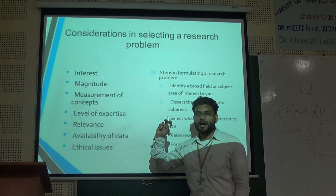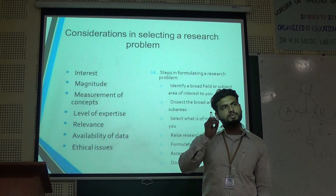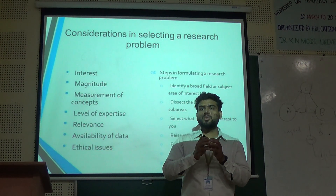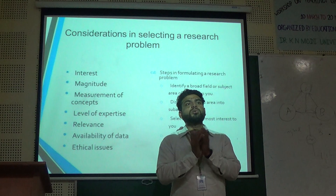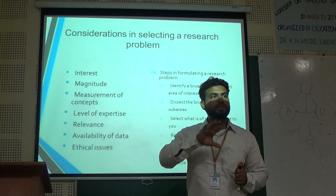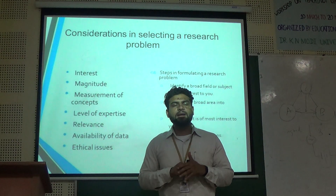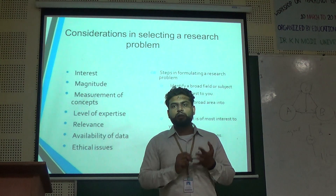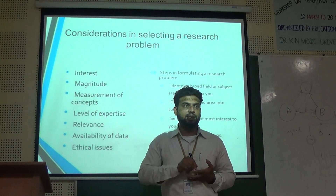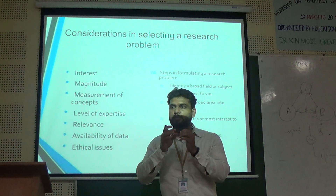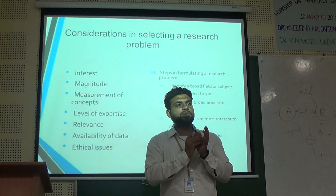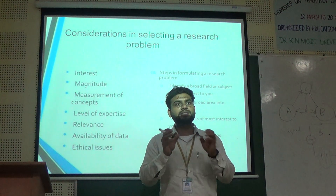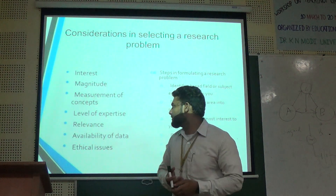Level of expertise: a graduate student cannot claim expertise in all fields. They have to synchronize and pinpoint their idea to find a particular problem. In management, there are many things — human resource has job satisfaction, motivation, style, attitude — but if I choose to pursue research only in leadership style, it will be much easier. If I try to research job satisfaction and motivation simultaneously, it will be very difficult. But if I select one small unit, I can pursue my research effectively.